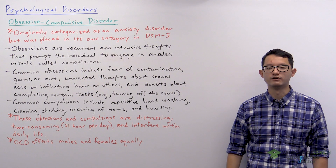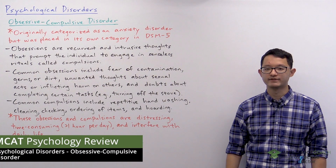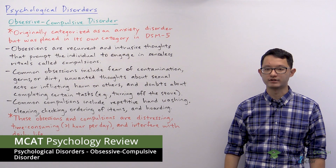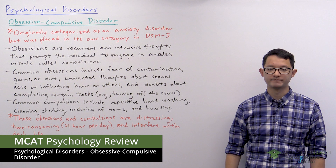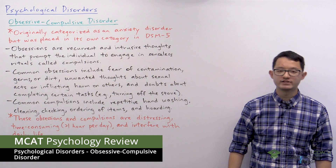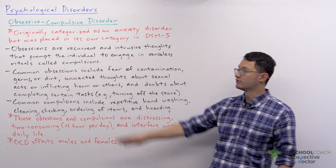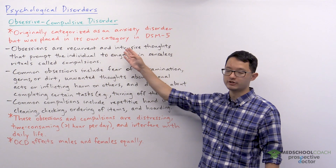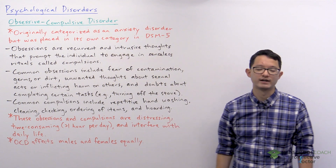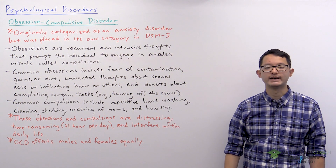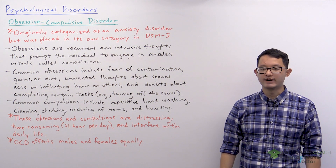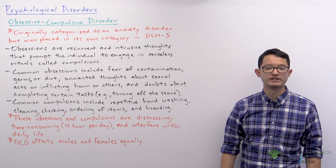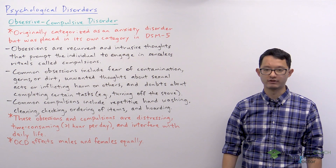In this video, we're going to go over obsessive compulsive disorder, which is often called OCD. The first thing to note is that OCD was originally categorized as an anxiety disorder, but in the DSM-5, it was given its own category.